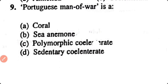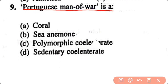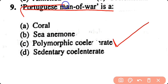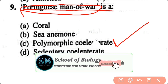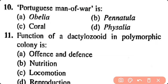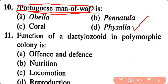Question number 9. Portuguese man of war is a: coral, sea anemone, polymorphic cnidarian. Correct answer is option C. Portuguese man of war is a Physalia, which is a polymorphic cnidarian belonging to class Hydrozoa. It is known as Portuguese man of war.